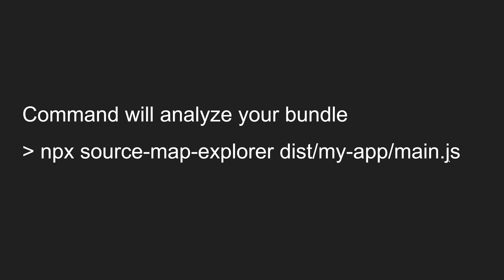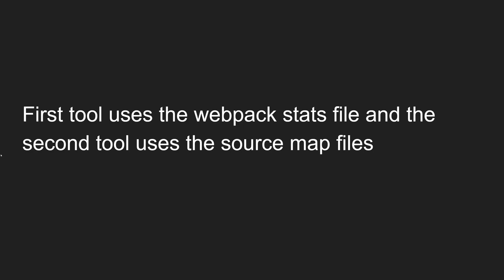After a successful build of the application, you need to type the command: npx source-map-explorer and then the file you want to analyze. For example, using the source map of main.js it will show you what bundles are available in that main.js file. Each file you specify like this — npx source-map-explorer — whatever JS file you want to explore, you can provide it. This command will analyze your bundle.